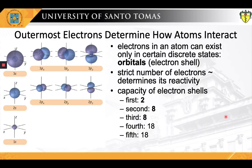Let's now look at electronic orbitals. Electronic orbitals are regions within the atom in which electrons have the highest probability of being found. The number of electrons in the outermost shell of a particular atom determines its reactivity, or tendency to form chemical bonds with other atoms.